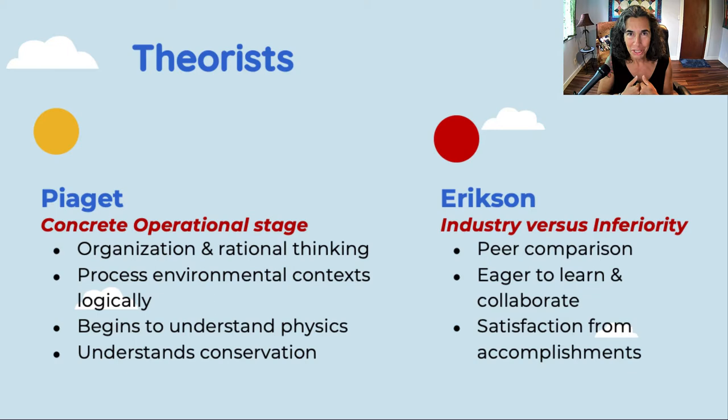Kids are no longer entirely ruled by their sensory-motor systems; the prefrontal cortex is starting to wake up and engage in intellectual thought — rational and logical thinking. Children in this stage are processing environmental contexts very logically, figuring out how the world works. They tend to be quite self-focused, which is normal — they're processing their environments in a logical manner and figuring out the physics of them.